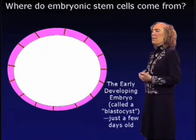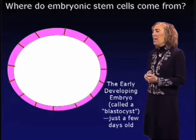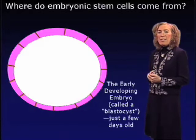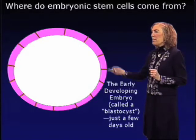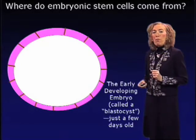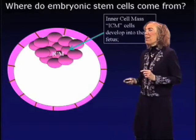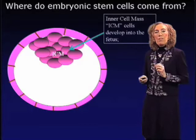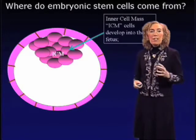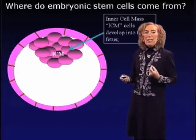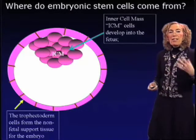Where do embryonic stem cells come from? My laboratory studies the mouse, as do many researchers in the stem cell field. In the early developing embryo — called a blastocyst — already at just a few days old, it has differentiated into two different cell types. The cells shown here in pink are called trophoblast cells, which are feeder cells supporting an additional group called the inner cell mass. These inner cell mass cells are the only cells able to give rise to the fetus, while trophoblast cells support the inner cell mass and do not contribute to the fetus.